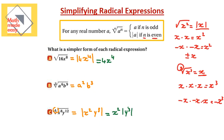To summarize the rule: if the index is even, you need an absolute value; if the index is odd, you don't. After writing the absolute value, check the exponent inside — if even, the result is always positive so remove the absolute value. If the exponent is odd, like y cubed, the sign depends on the value of y, so it stays inside the absolute value.